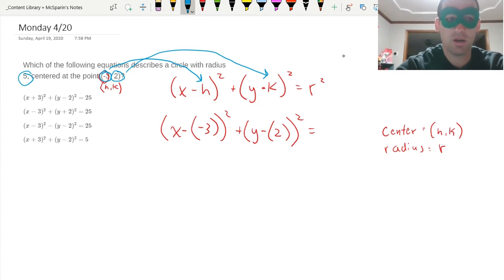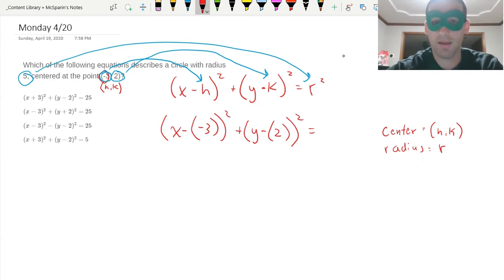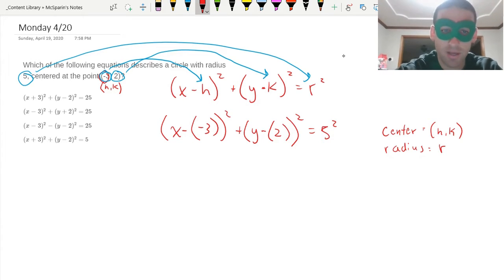And then I'm going to take my radius r and put it there, so I'm going to have 5 squared. Okay, so let's go ahead and let's do it.